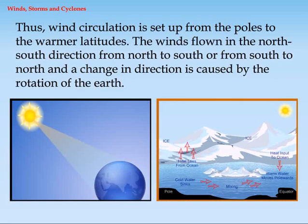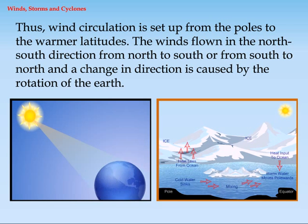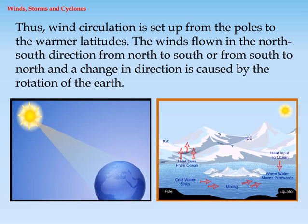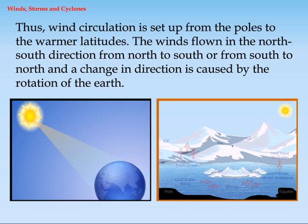Thus, wind circulation is set up from the poles to the warmer latitudes. The winds flow in the north-south direction — from north to south or from south to north — and a change in direction is caused by the rotation of the earth.